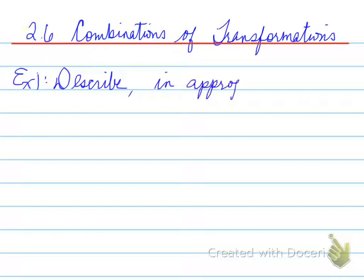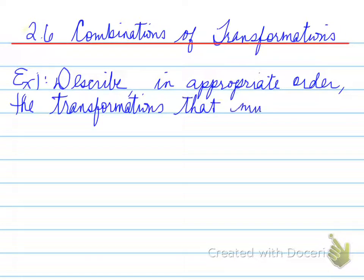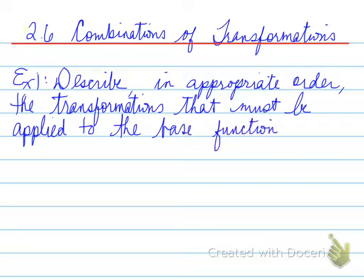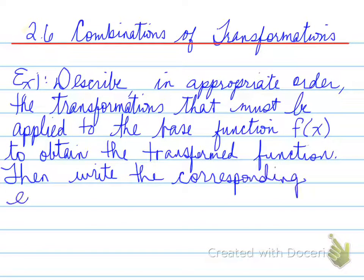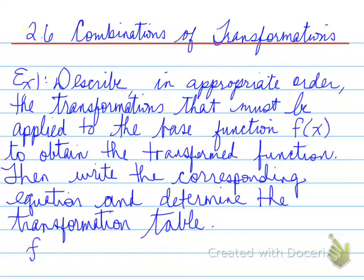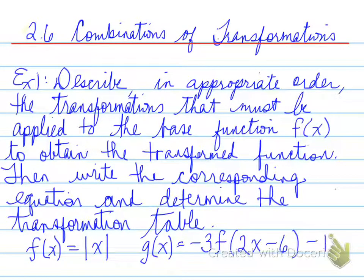So example one, you're asked to describe in appropriate order the transformations that must be applied to the base function f(x) to obtain the transformed function. Then write the corresponding equation and determine the transformation table. So f(x) equals the absolute value of x, and g(x) equals negative three times f(2x minus six) minus one.